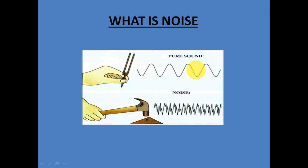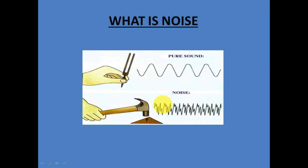Whereas what is noise? If we hammer a nail, this is an unwanted sound. It won't be a sine wave anymore but will be something like what is shown on the screen. The pattern is different — here it is a sound wave, but there it is not a sound wave. It is some kind of ups and downs which are not regular. This is how we identify noise.